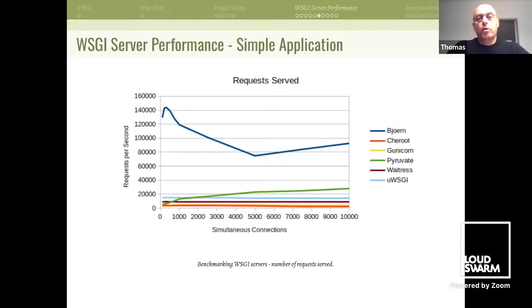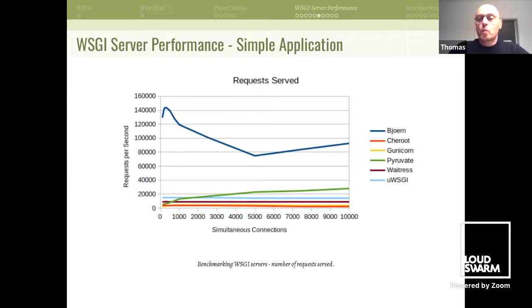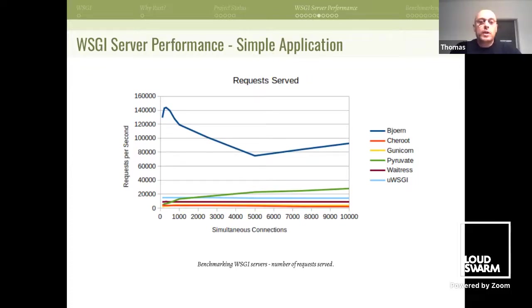Looking at the benchmarks — number of requests served — we see something already reported in the original benchmark: Bjorn is really outpacing all the other servers, serving a lot more requests per second. Then we can see that Pyruvate is not doing badly. It has some performance issues at the start with a low number of simultaneous connections where uWSGI and Waitress do slightly better, but then it picks up and sustains a higher load.